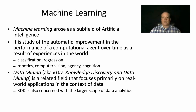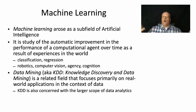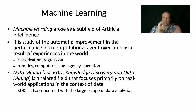Machine learning arose as a subfield of artificial intelligence. It is the study of the automatic improvement in the performance of a computational agent over time as a result of experience in the world. Artificial intelligence is the big topic — trying to replicate all the ideas of rational agents within a computer. Machine learning is a specific aspect of that where, given a set of data, we want to find particular patterns that we can use.